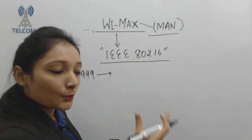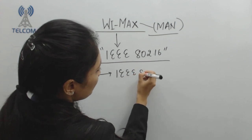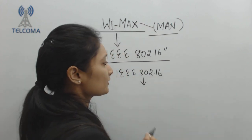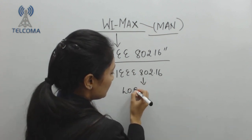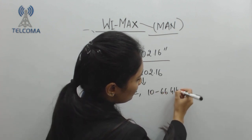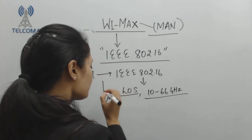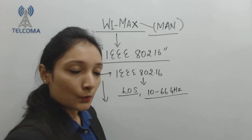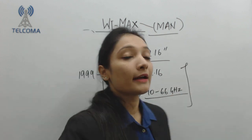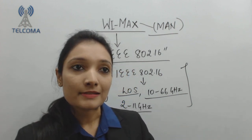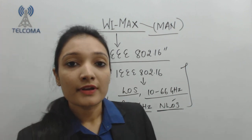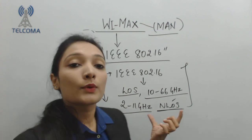In 1999, the first basic network standard formed was IEEE 802.16, which was for line-of-sight links and operated in the frequency range of 10 to 16 GHz. After that, researchers focused on another operating frequency of 10 to 11 GHz. For wireless data access, similar to Wi-Fi systems, the user is mostly in a non-line-of-sight scenario.